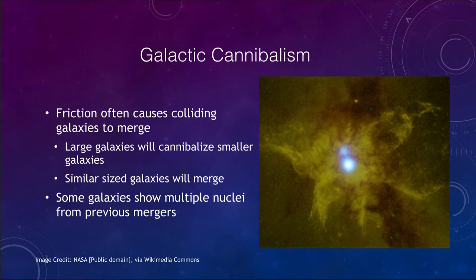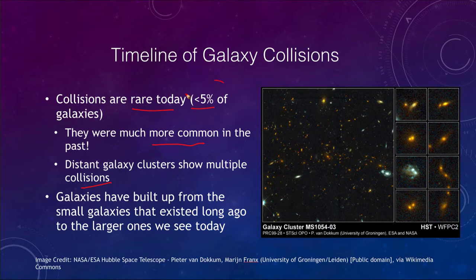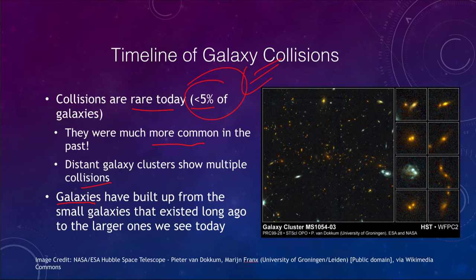What kind of timeline do we have? Galaxy collisions today are very rare — about 5% of galaxies — so not completely uncommon, but most galaxies are not currently colliding. However, they were much more common in the past. Distant galaxy clusters show multiple collisions, far more than the 5% we count today, sometimes with multiple galaxies colliding simultaneously. This process has built up the galaxies we see today — the great spirals and great ellipticals — all formed from smaller galaxies that existed long ago, slowly building up through collision and cannibalization into the much larger galaxies we see today.